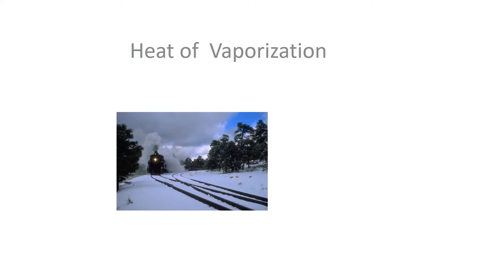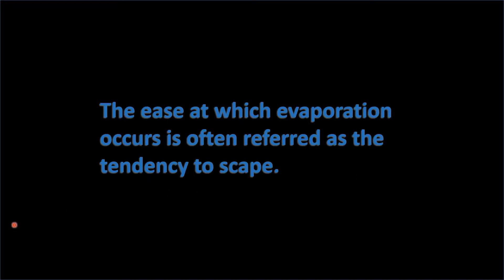Heat of vaporization is kind of interesting. Vaporization is an important thing. The standard heat of vaporization can actually be found on the thermodynamic tables, listed in the phase change section. The ease at which evaporation occurs is often referred to as the tendency to escape. Different liquids have different tendencies to escape — alcohol will evaporate much more quickly than water. We're going to work out a problem for water and examine water's tendency to escape.